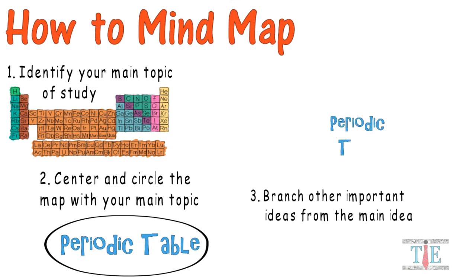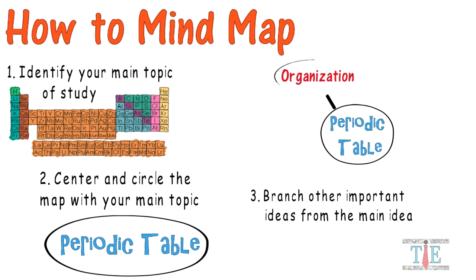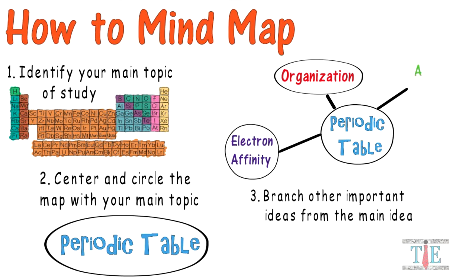Here is the main topic, and you can then draw lines to other important ideas. For example, organization is one subtopic. Another subtopic of the periodic table is electron affinity. You can also add atomic radius and metallic properties.